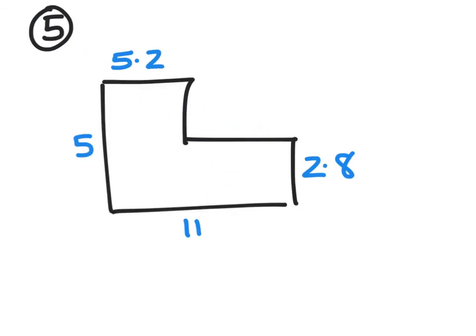Question 5: calculate the area and the perimeter. First task we've got here is what's this missing side? Well, we know this is 5.2, we know this is 11, and we know that the 5.2 and this missing side should add up to 11. So that should help you find this missing side here.